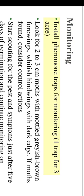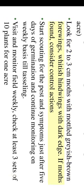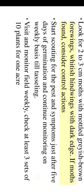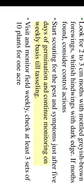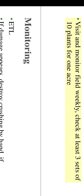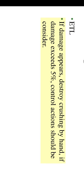Monitoring: install pheromone traps for monitoring — one trap per three acres. Look for 2–3 cm moths with mottled grayish-brown forewings and whitish hindwings with dark edge. If moths are found, consider control actions. Start scouting for pest symptoms just after five days of germination and continue monitoring on a weekly basis until tasseling. Visit and monitor the field weekly; check at least three sets of ten plants per acre. ETL: if damage appears, destroy by crushing by hand. If damage exceeds 5%, control actions should be considered.